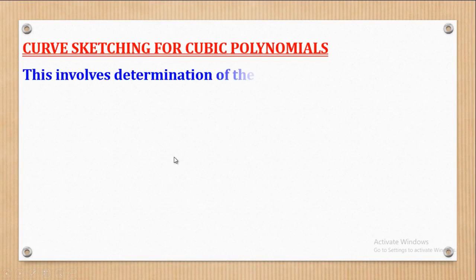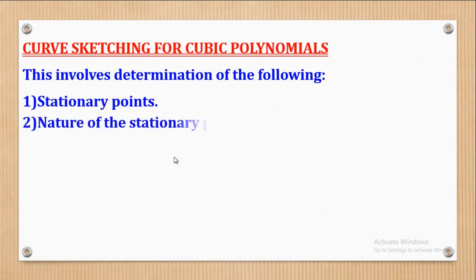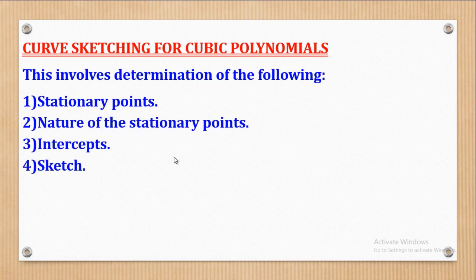Curve sketching for cubic and higher polynomials involves determining the following: one, the stationary points; two, the nature of the stationary points; three, intercepts; and lastly, the sketch. The process is the same as for quadratic polynomials, but the difference is that for cubic and higher powers, there is more than one turning point or stationary point — there are two or more.